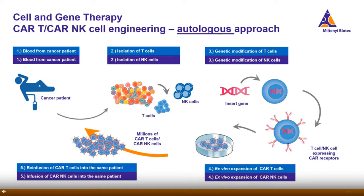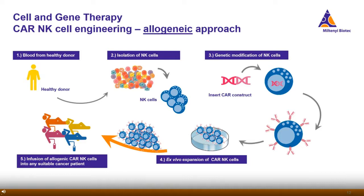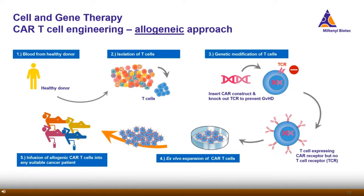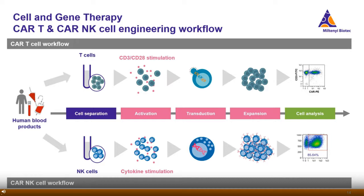However, for CAR NK cells the allogeneic approach is more common, because it's easier — there is no need for further modifications. You simply isolate NK cells derived from any healthy donor and follow the same workflow as for the autologous approach. The only difference is that the final NK cell product is infused into any suitable cancer patient. In comparison, for allogeneic T cells there is a need to knock out the endogenous T cell receptor. Independent of the approach, Miltenyi Biotech offers solutions to generate both engineered T and NK cells.